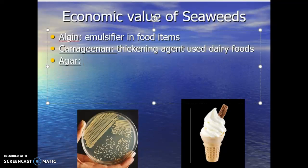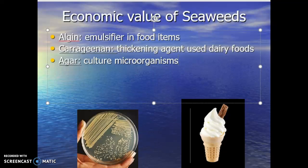The third product is agar. A lot of you, if you've taken a microbiology course or a course that involves growing bacteria, know that agar is used to culture various microorganisms. So bacterial plates, petri dishes for pollen tests, mold tests, fungal tests, antibiotic resistance — we use different types of agar. Different seaweeds are processed to give us various agar mediums. We see it not just for culturing microorganisms in healthcare, but also as a thickening agent in food.